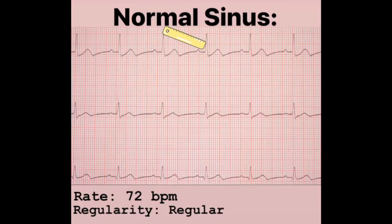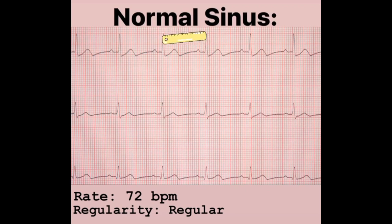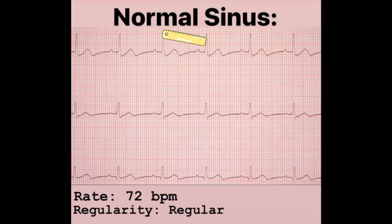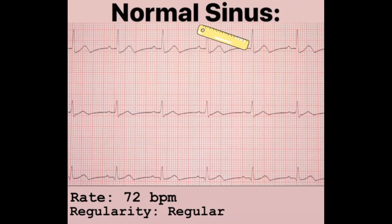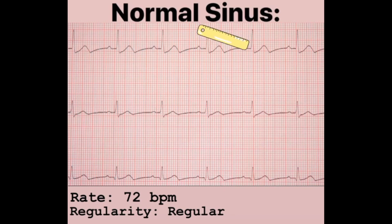The next thing we check is regularity. We're going to measure between our QRS complexes — and make sure you get a really scientific ruler like I have right here. They appear to be regular. Now we're going to measure between our P waves and they appear to also be regular. So that is off our checklist and we're on to the next.